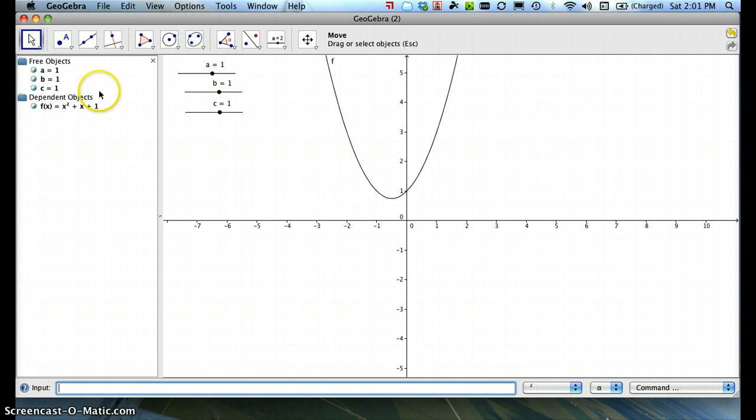So this is right now graphing, if you look in the Algebra view, you can see the function f of x equals x squared plus x plus 1. That's what's being graphed. You're on the Move tool, you can vary A. It updates. You can see in the Algebra view that the function is being updated. You can see the graph is also being updated as you move or as you change one of the parameters.